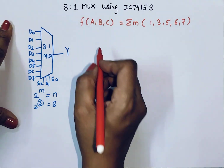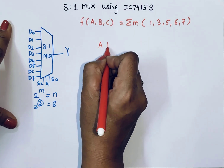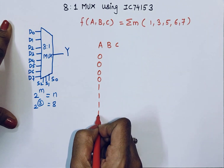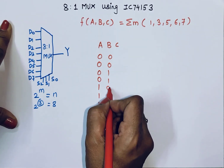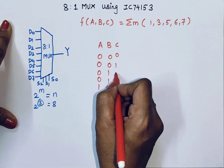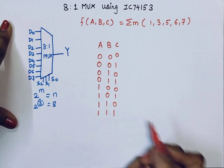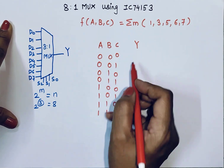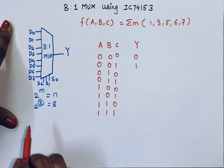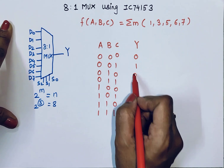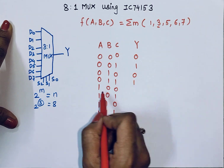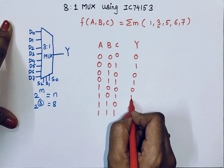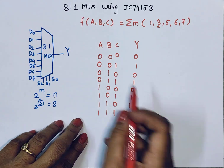I'll write the truth table for this. For A, B, C: minterm 0 output is 0, minterm 1 output is 1, minterm 2 output is 0, minterm 3 output is 1, minterm 4 output is 0, and minterms 5, 6, and 7 output is 1.